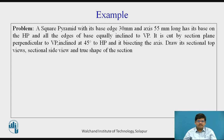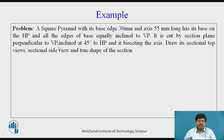Let us analyse the question. The object given is a square pyramid whose base edge is 30 mm and axis is 55 mm long. It is resting with its base on HP such that all edges are equally inclined to VP. It is then cut by a section plane which is perpendicular to VP, inclined at 45 degrees to HP, and bisecting the axis. Bisecting the axis means the cutting plane passes exactly at the midpoint of the axis.